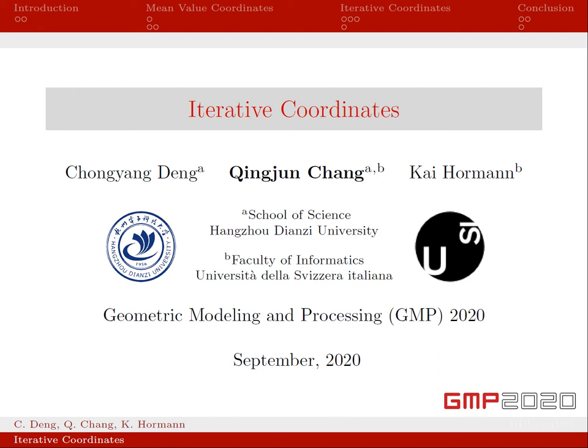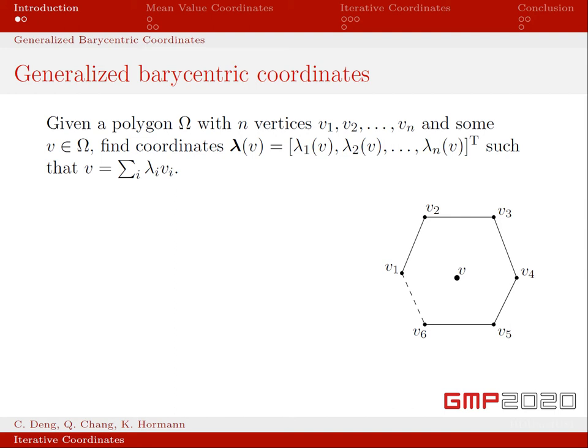First, let me briefly introduce generalized barycentric coordinates, that is GBC. As you can see in this figure, for any v inside some polygon, we would like to have coordinates lambda such that v is summation of lambda_i v_i. This is the so-called reproduction property, and the coordinates lambda v are called the GBCs of v with respect to the polygon.